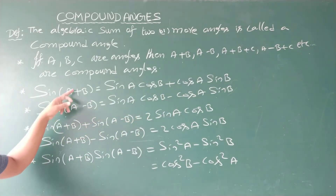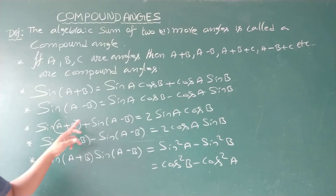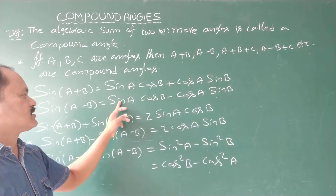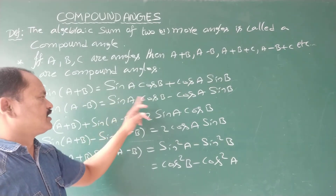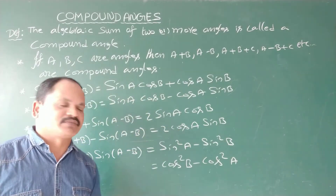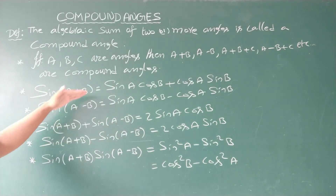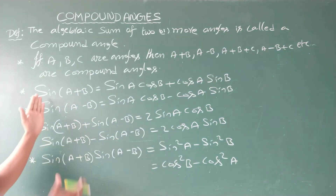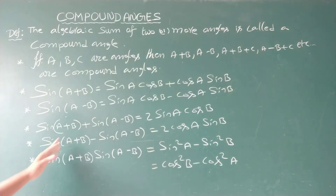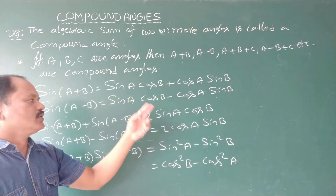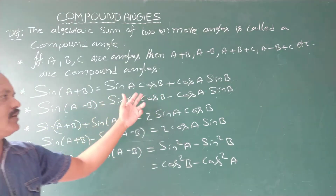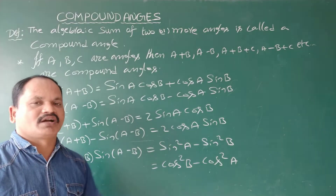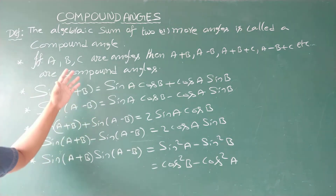Now the sum of these two expansions: sine A plus B plus sine A minus B — the cos A sine B terms get cancelled, giving two times of sine A cos B. The difference of the two (first minus second): the sine A cos B terms get cancelled, giving two times of cos A sine B. The product of these two, according to the (a+b)(a-b) form, after simplification gives sin squared A minus sin squared B, or equivalently cos squared B minus cos squared A.